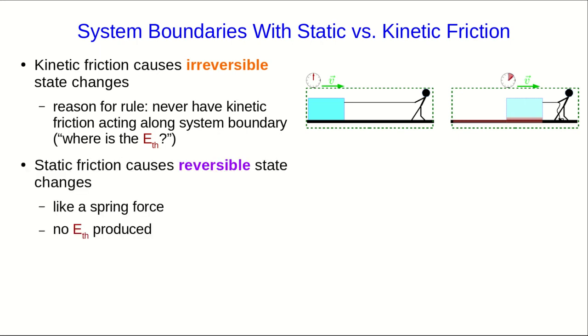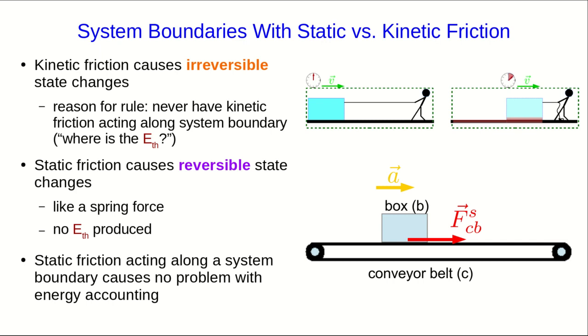But static friction causes reversible state changes. It's really just like a spring force acting on microscopic scales, and so there's no thermal energy produced by static friction. So we don't run into this problem of figuring out where the thermal energy is, and so it causes no problem if we define our system with the static friction acting across the system boundary.